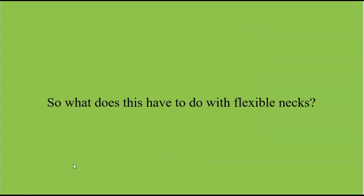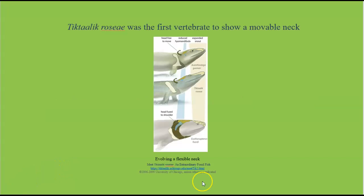So what does this have to do with having flexible necks? The Tiktaalik rosea was the first vertebrate to show a movable neck. In this diagram, the Tiktaalik is in the middle, showing an intermediate between the head fused to the shoulders and a freely movable head. Also, being in the shallow water, the head of the Tiktaalik flattened out horizontally, much like a croc, so it could easily lift its head above water to take a breath of air without moving the rest of its body.